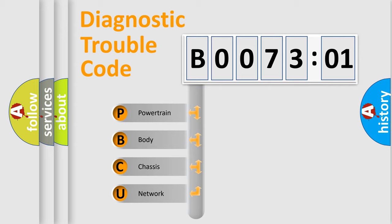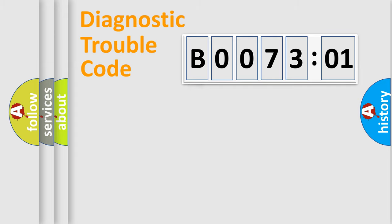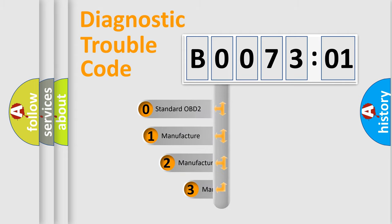We divide the electric system of automobile into four basic units: Powertrain, Body, Chassis, Network. This distribution is defined in the first character code.